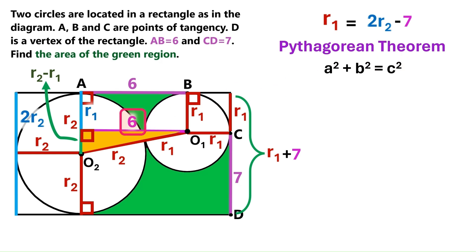One of the shorter sides of the yellow triangle is 6, so let's take the square of 6. The other short side is R2 minus R1, so let's take the square of that. And this is the longer side, and it equals R2 plus R1, so we'll take the square of that too.